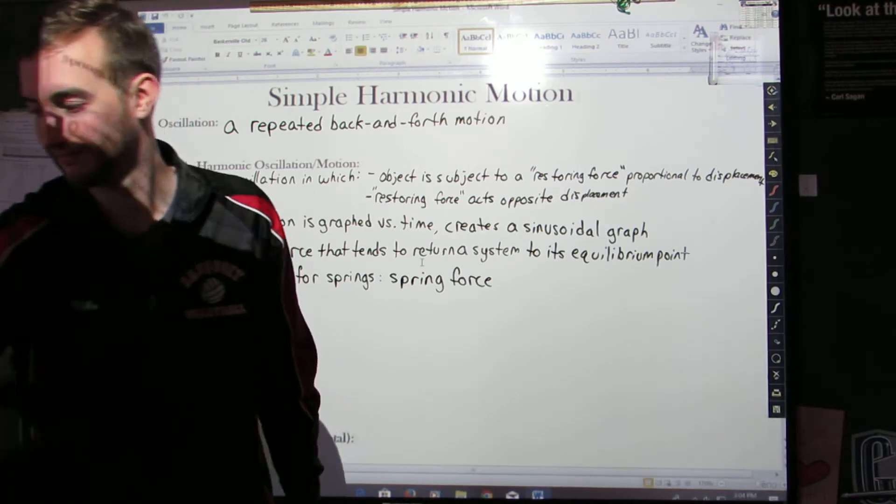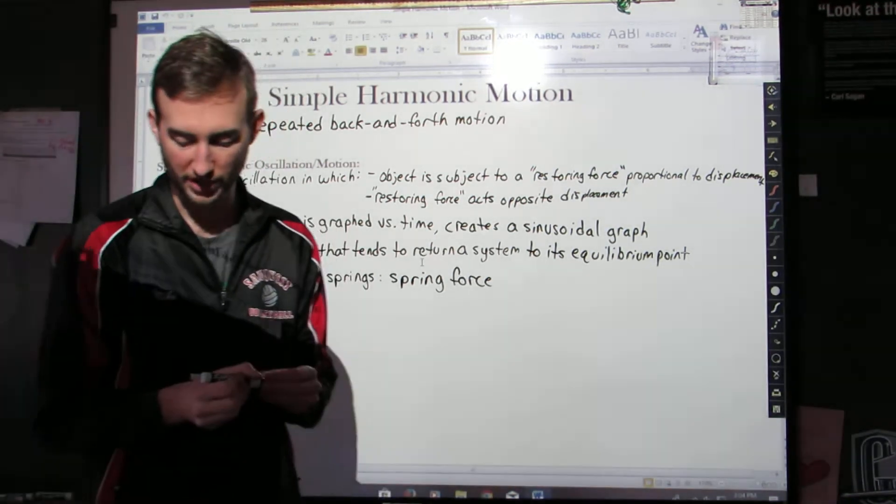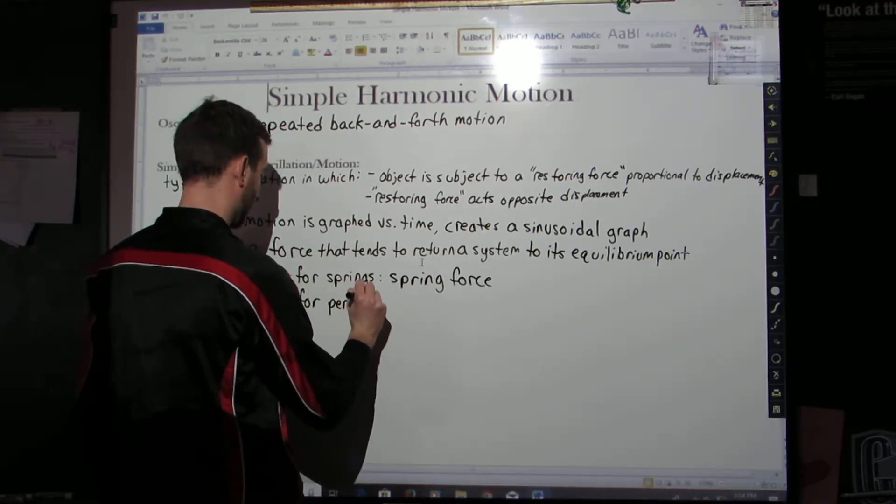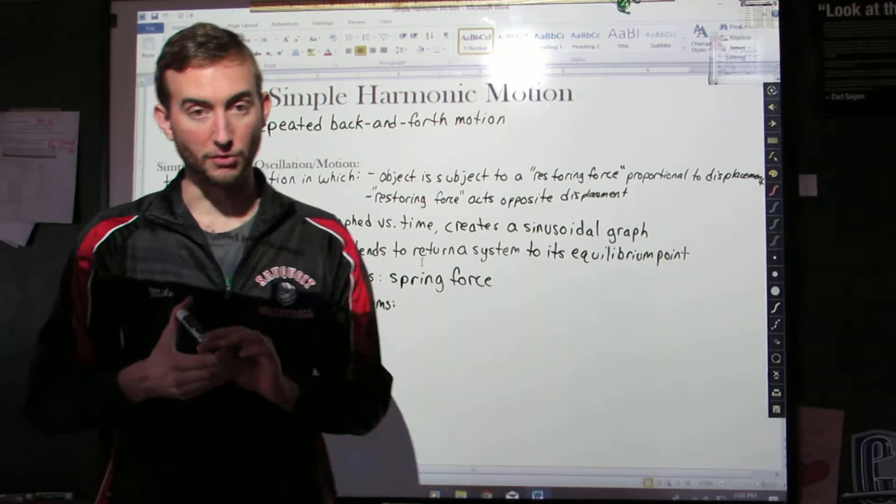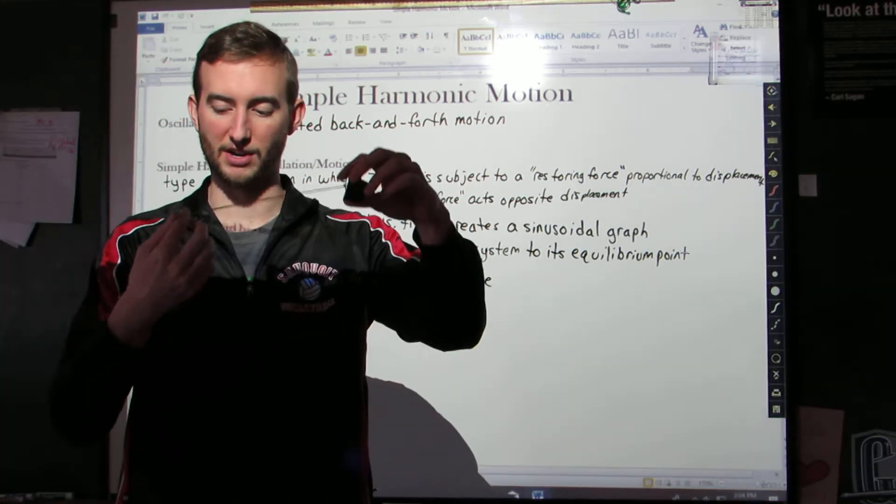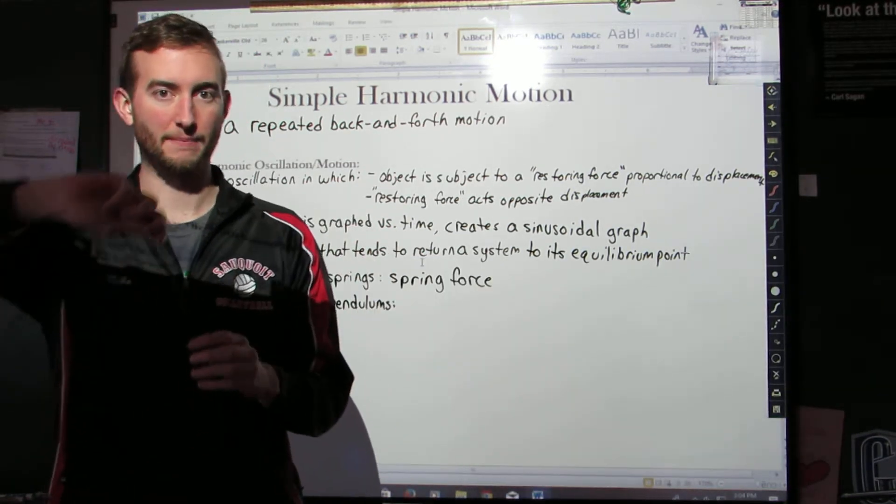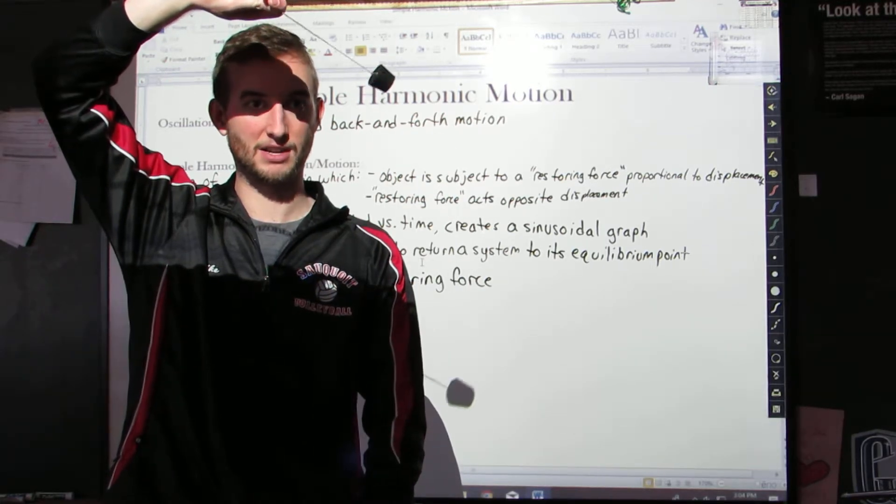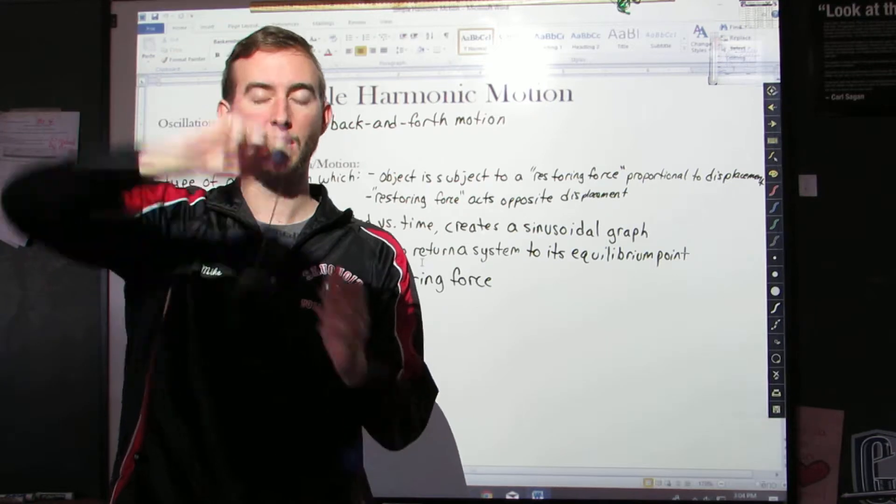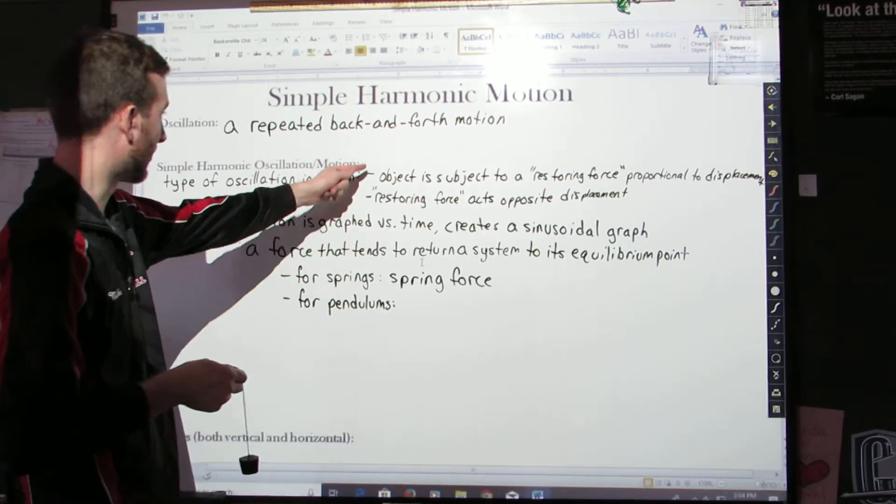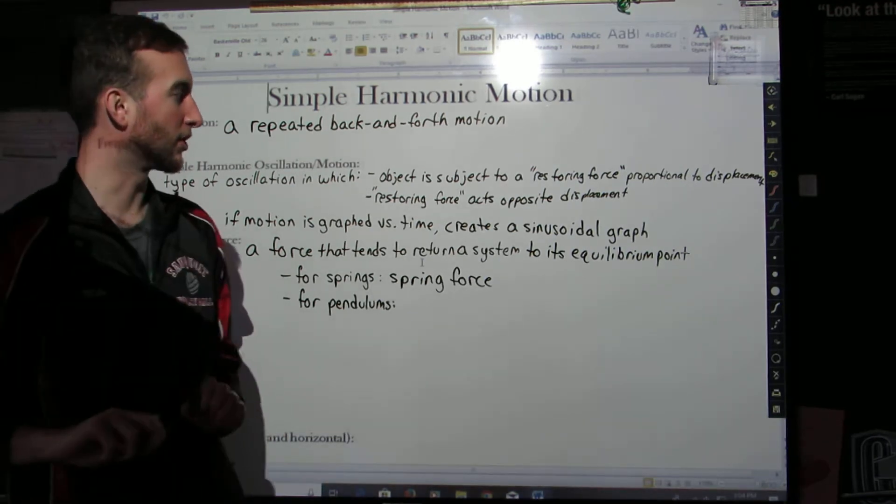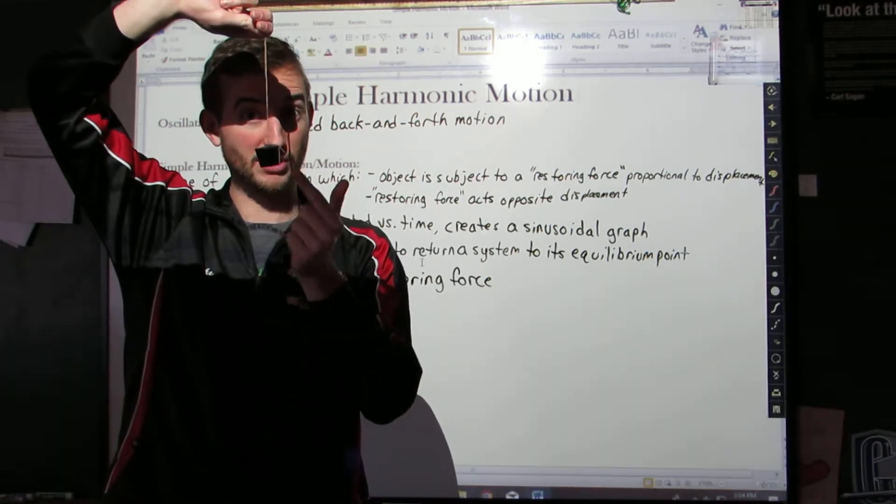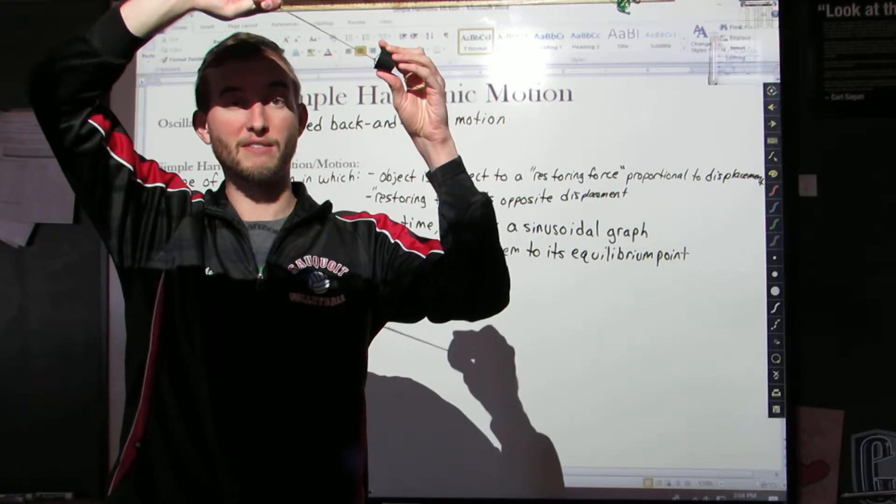The other example of simple harmonic motion that we will talk about are pendulums. A pendulum also undergoes simple harmonic motion to an extent. There is a qualifier in front of that. The pendulum is very simple. You have something hanging on the end of a string. You move it up. You displace it. And you let it oscillate back and forth like this. So again, it does satisfy these two characteristics. There is a restoring force proportional to the displacement, and the restoring force acts opposite the displacement. What force brings the pendulum back towards its equilibrium position? Here's equilibrium right here. What force brings it back down here? Gravity.